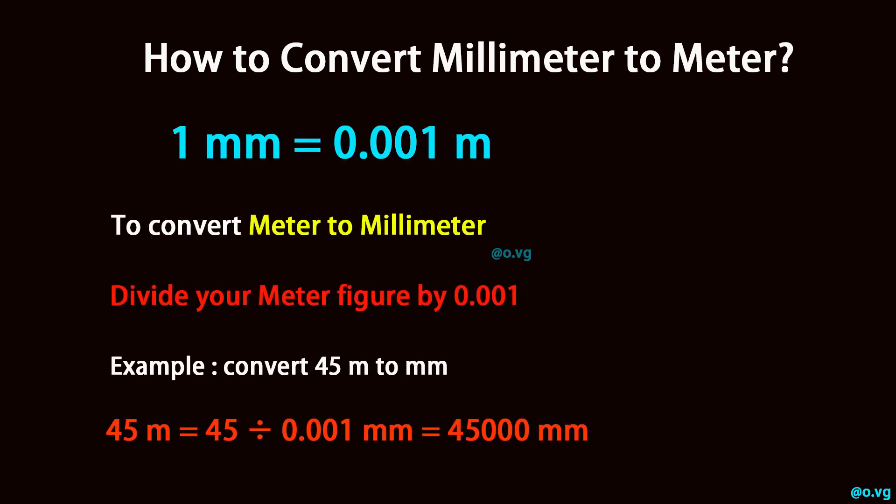To convert meter to millimeter, divide your meter figure by 0.001. Example: convert 45 m to mm. 45 m equals 45 divided by 0.001 millimeters, equals 45,000 millimeters.